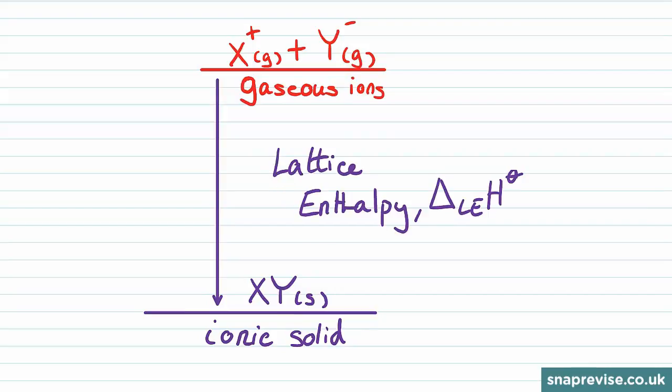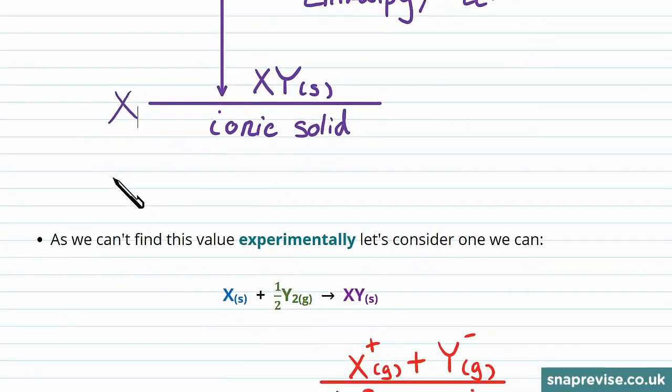So now I've always said we can't experimentally find this value, so we want to find another route from this point in the cycle to this point. So now let's consider how we can do this.